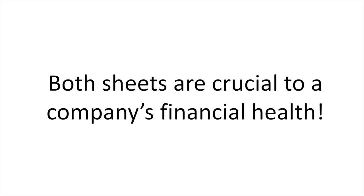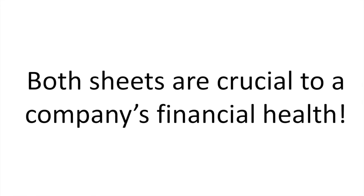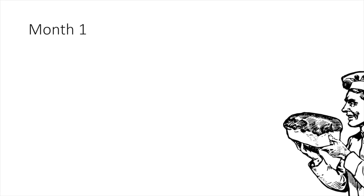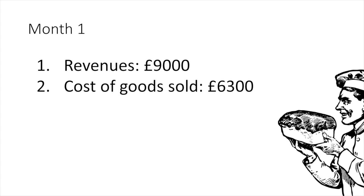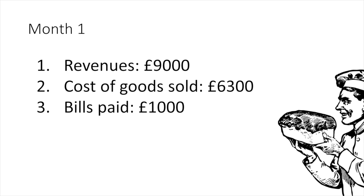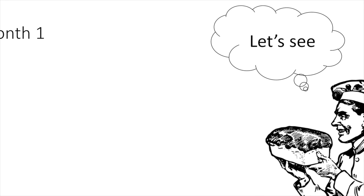Which one should I choose then? The important thing to notice is that both sheets are crucial to a company's financial health. I'll tell you a little story so that this becomes clearer. John opened his first business, a little bakery in a small town. This is what the first month of business went like. The bakery generated £9,000 of revenues and spent £6,300 of materials and ingredients to produce the breads and cakes — this is known as the cost of goods sold. The bills added up to another £1,000 of expenses and the rent was paid for 3 months in advance.